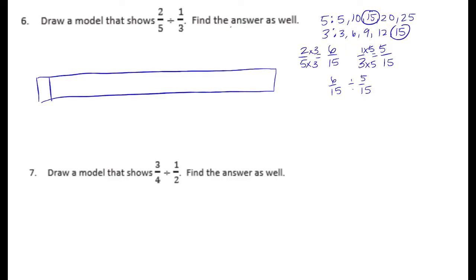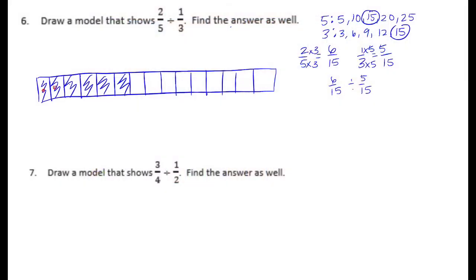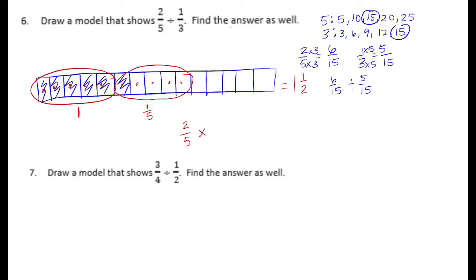I'm going to separate it into fifteenths, and we have 6 fifteenths. I'll divide them into groups of 5 fifteenths. Here's 1, 2, 3, 4, 5 — so there's 1 group. And 1, 2, 3, 4, 5 — there's another group, but we only have 1 shaded out of the 5. So it would be equal to 1 and 1 fifth. Let's double check with invert and multiply: 2 fifths times 3 over 1 equals 6 fifths, or 1 and 1 fifth. Correct.